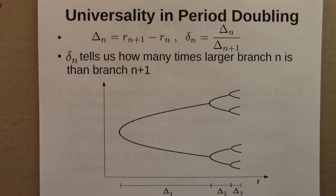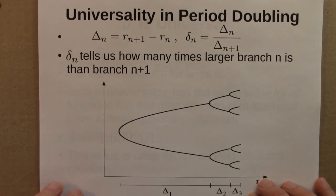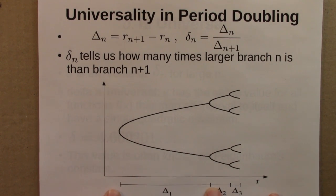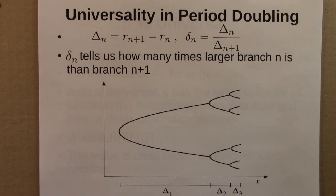So then we looked at the period doubling route to chaos a little bit more closely. And in particular I defined this ratio delta. It tells us how many times larger branch n is than branch n plus 1. So delta is how much larger or longer this is than that. That would be delta 1. And how much longer, how many times longer is this length than that. That would be delta 2.